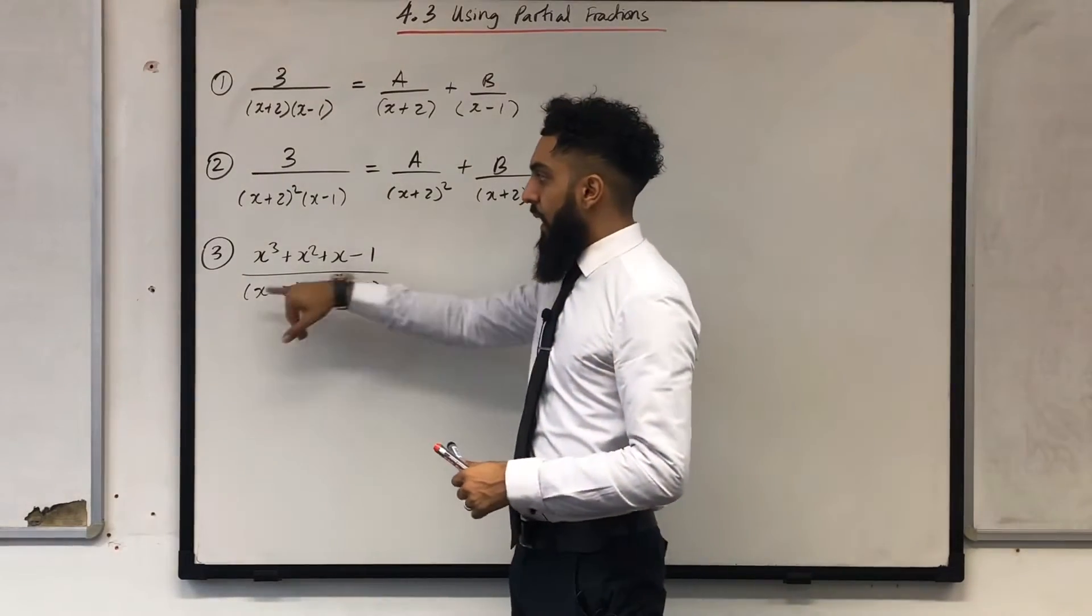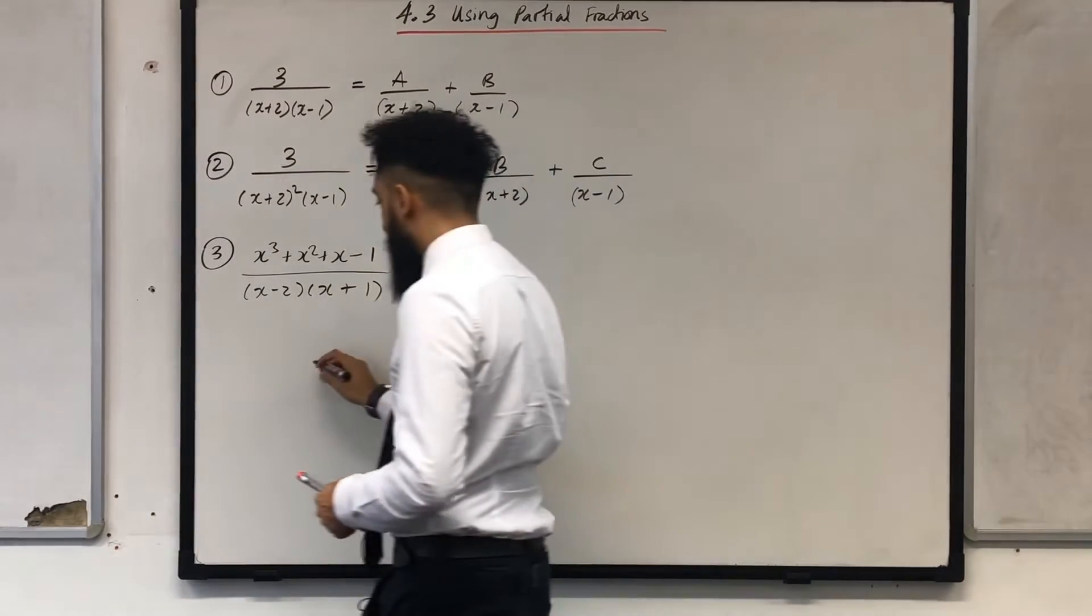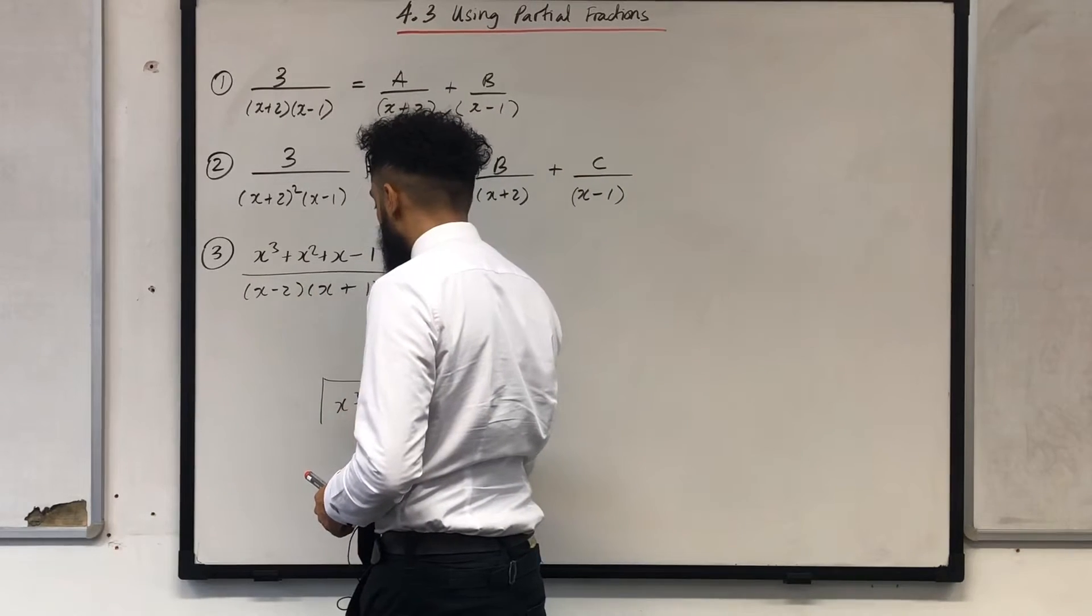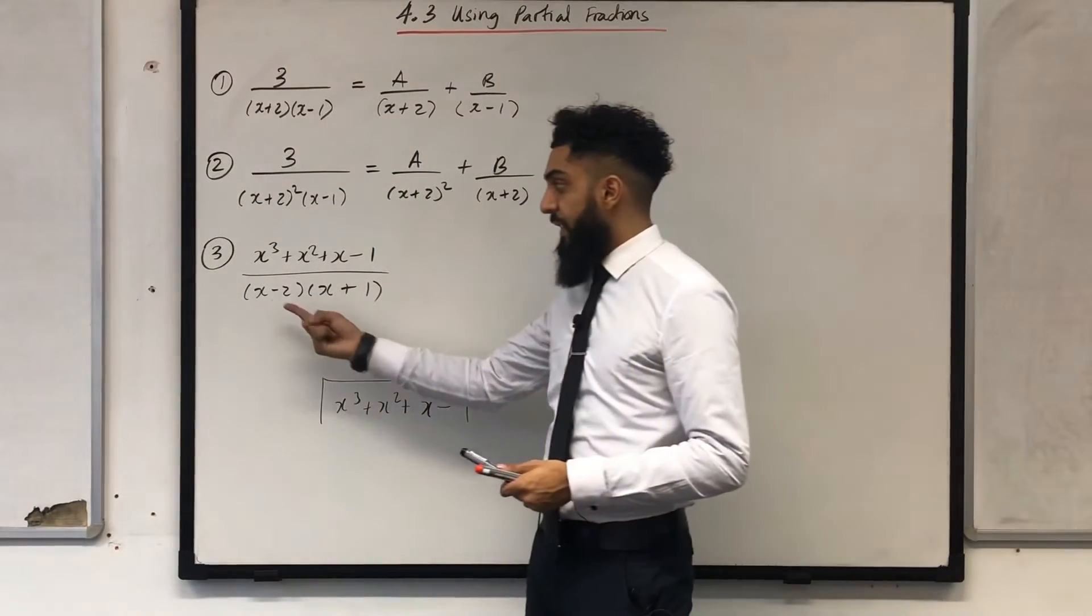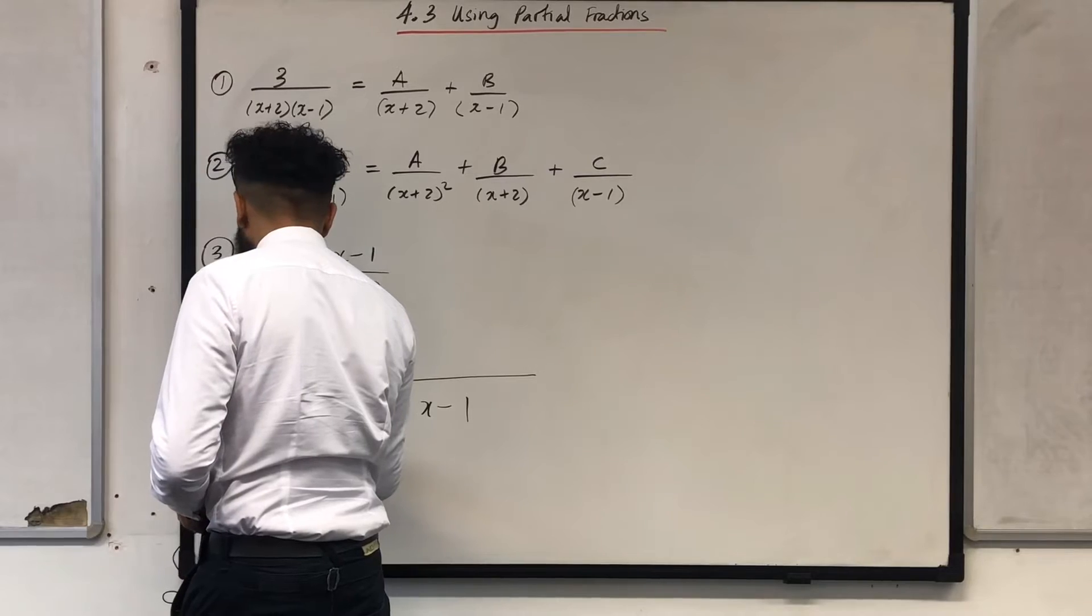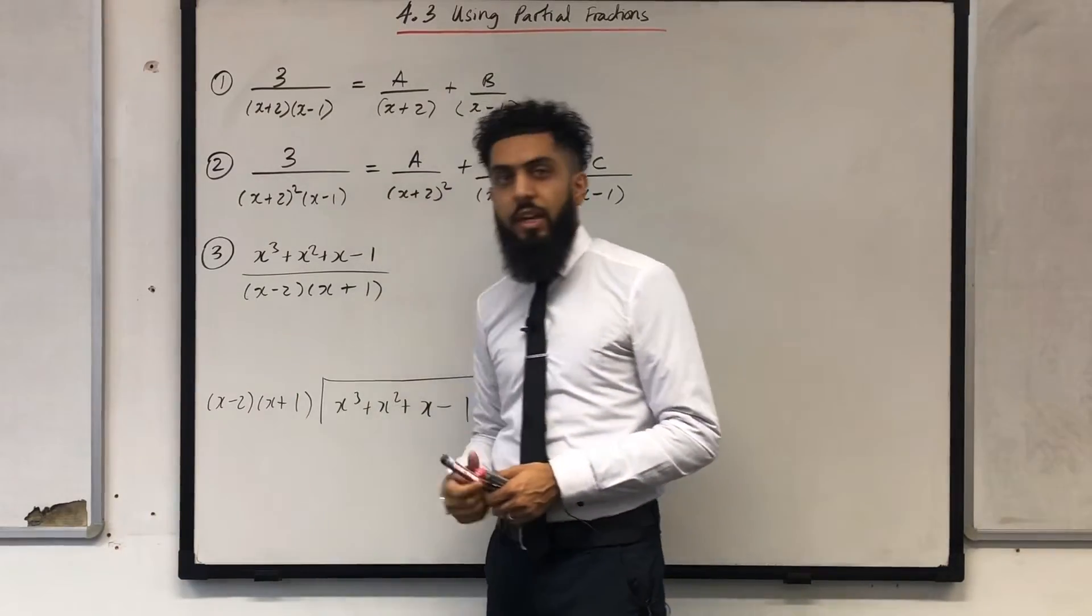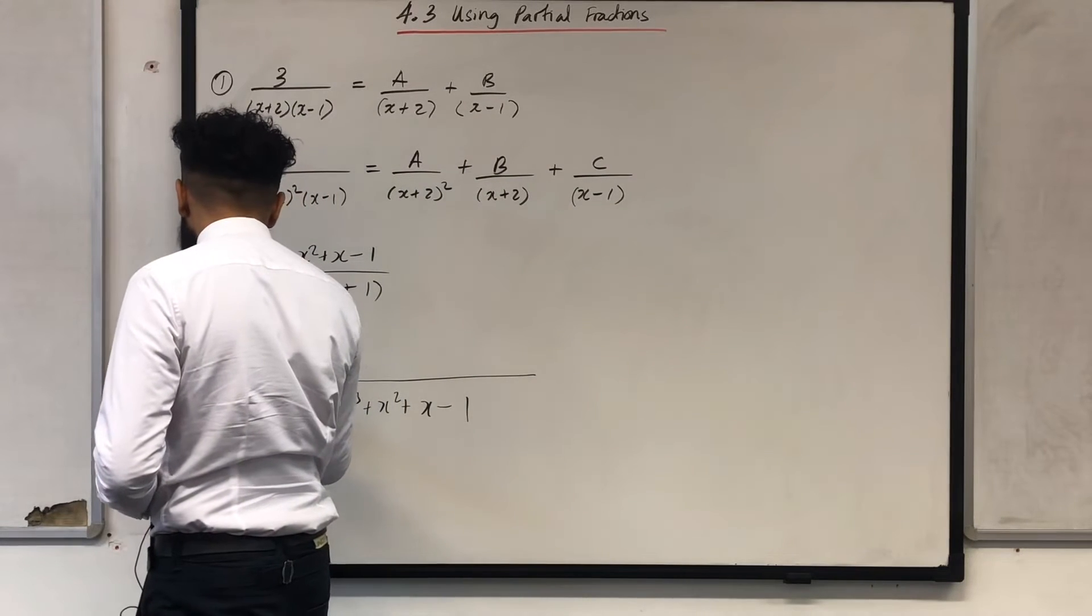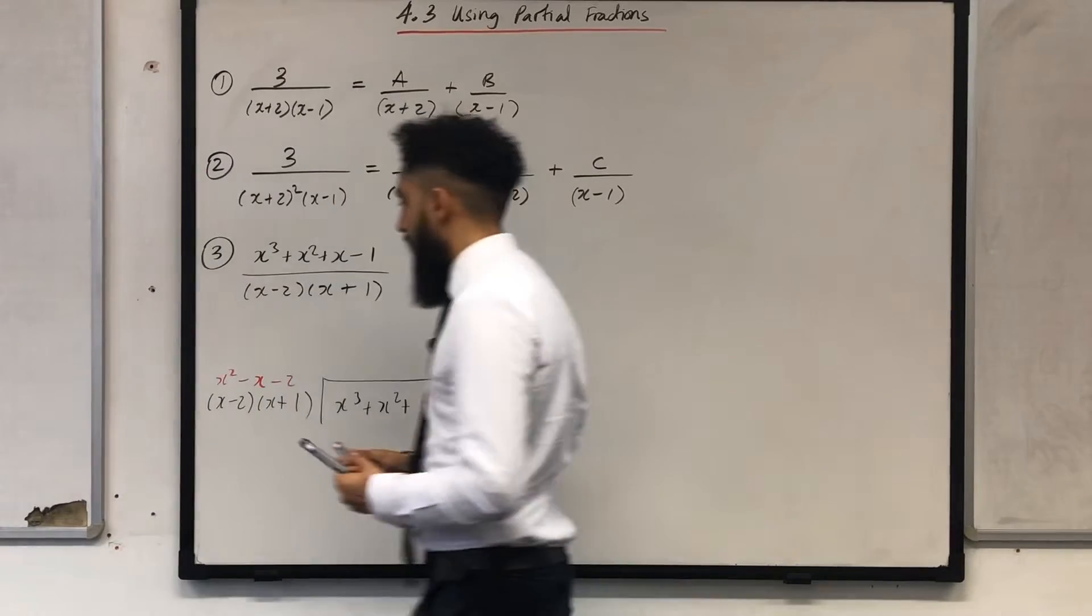Now if you have an improper fraction the very first step is to use long division. So if you set up your bus stop inside you'll put your cubic, that's x cubed plus x squared plus x minus 1. And the divisor in this case is this particular quadratic. So the divisor is in bracket x minus 2 in bracket x plus 1. Now when you're doing long division your target is to first of all expand this bracket and then carry out your long division. So if I expand this bracket I get something like x squared minus x minus 2.